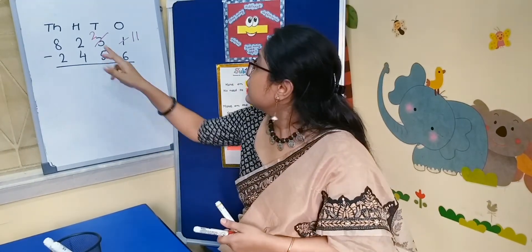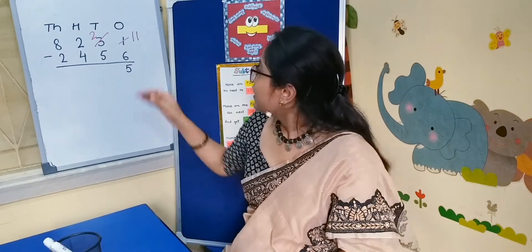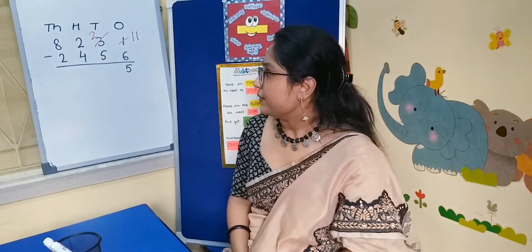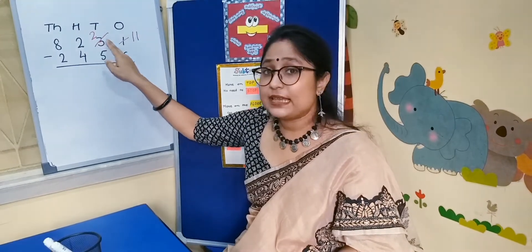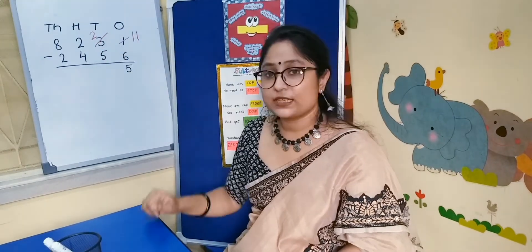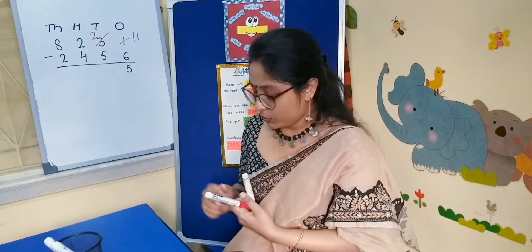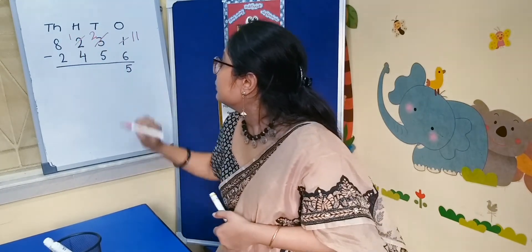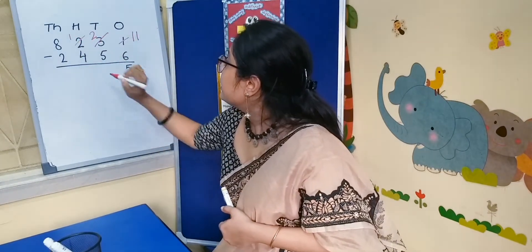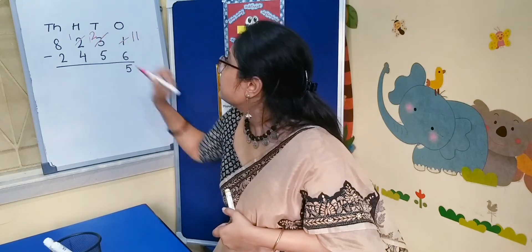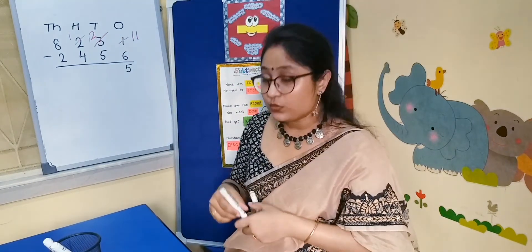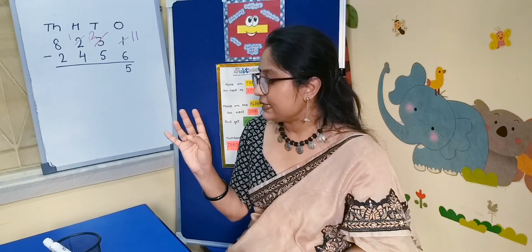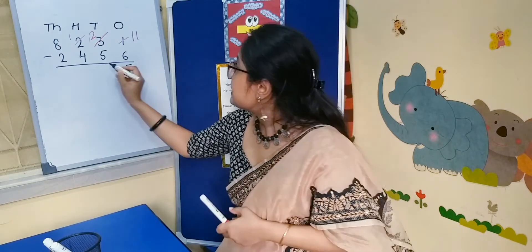Now here it is 2 on top and 5 on the floor. So it is less on the top and we have to go to the next door. We will borrow 1 from the hundreds column and it will become 12. Now we count from 5 to 12: 5, 6, 7, 8, 9, 10, 11, 12 — that is 7.